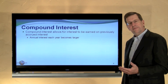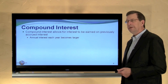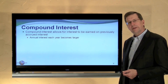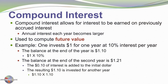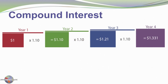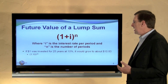We can actually start to quantify the value of these cash flows. First, we need to think about compound interest. Compound interest allows for interest to be earned on previously accrued interest, and annual interest becomes larger each year — this is also referred to as future value concepts. For example, if one invests $1 at 10% for one year, it would grow to $1.10. If that $1.10 is reinvested for the next successive year, it would earn $0.11 of interest and grow to $1.21, and so it would go in time, as shown by this graphic.